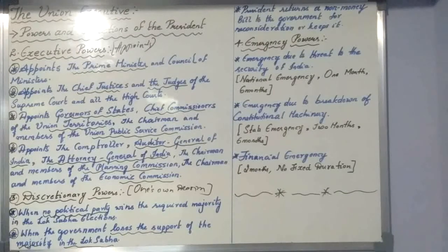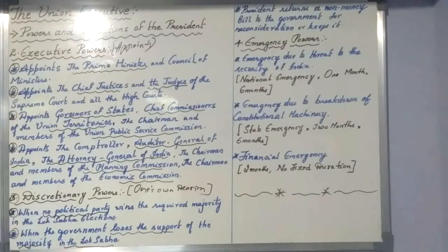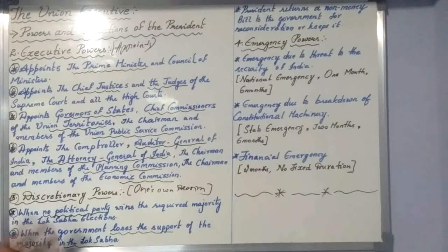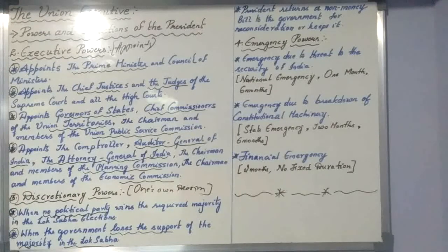The second type is a state emergency, proclaimed when there is a constitutional breakdown in a particular state. This can occur when political parties clash or when the ruling party loses its majority support in a state. During that time, a state emergency can be proclaimed for that particular state.